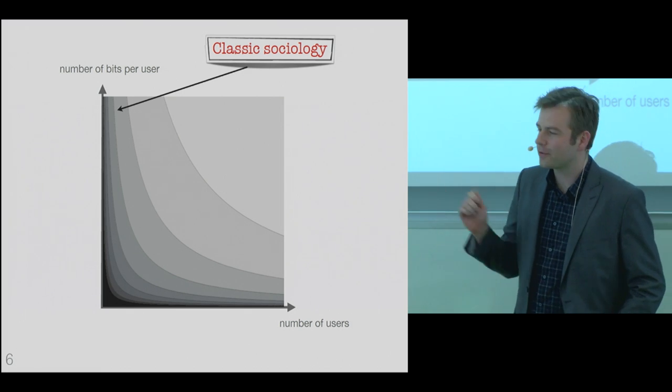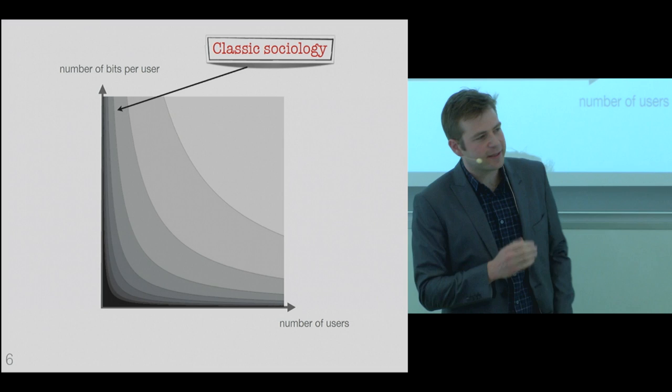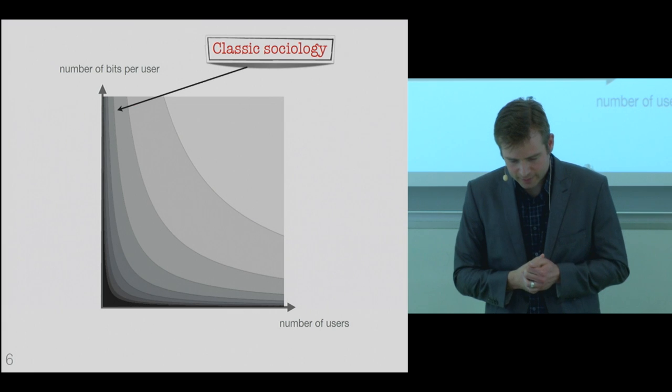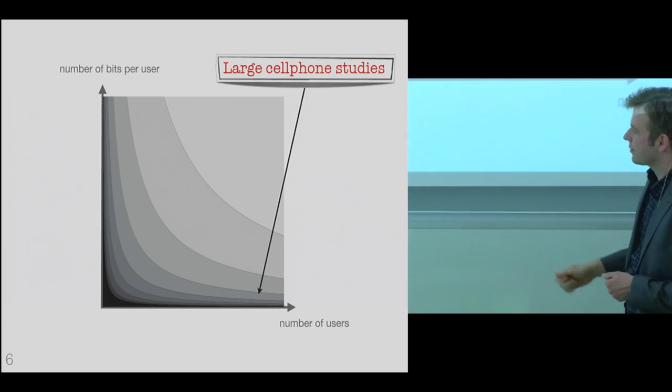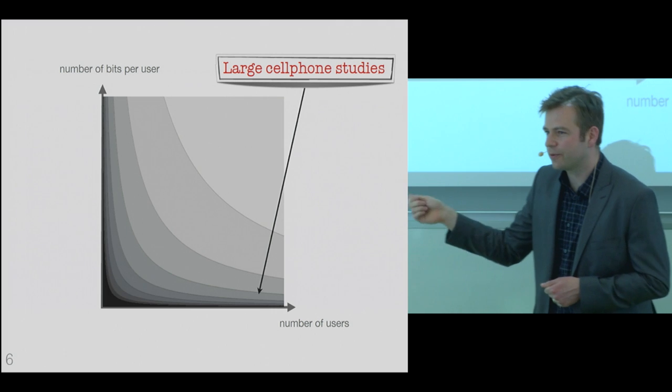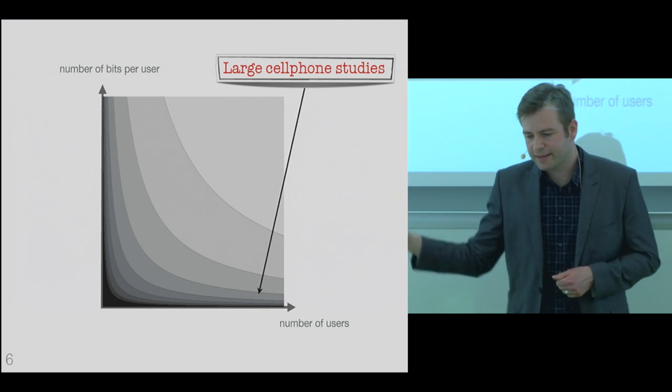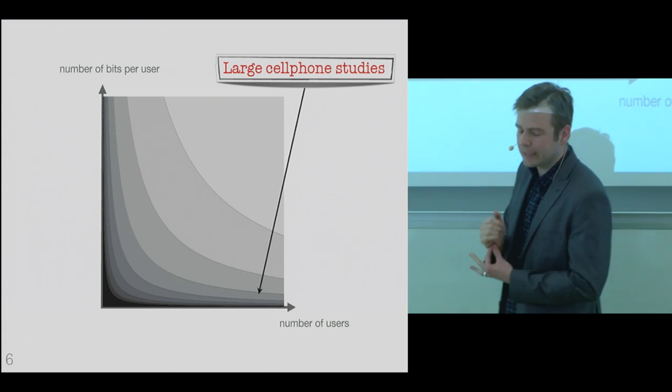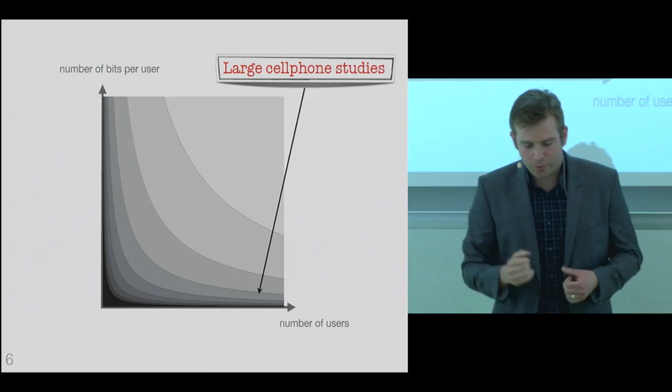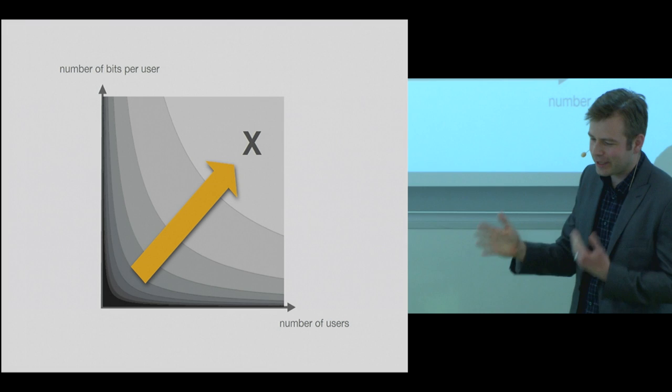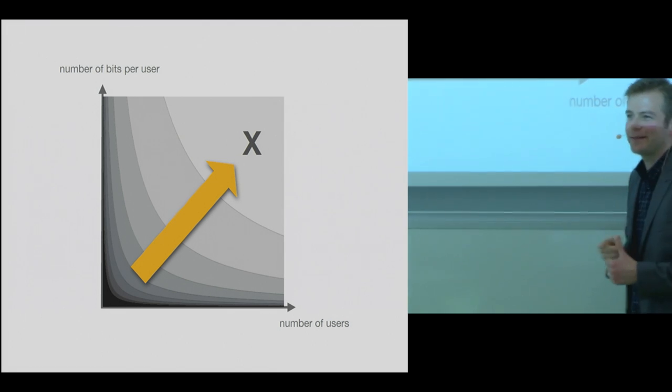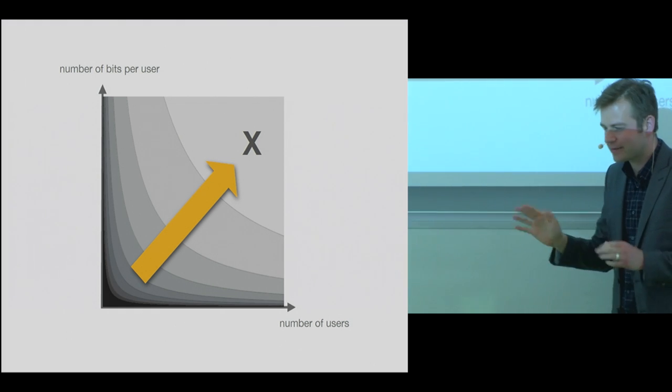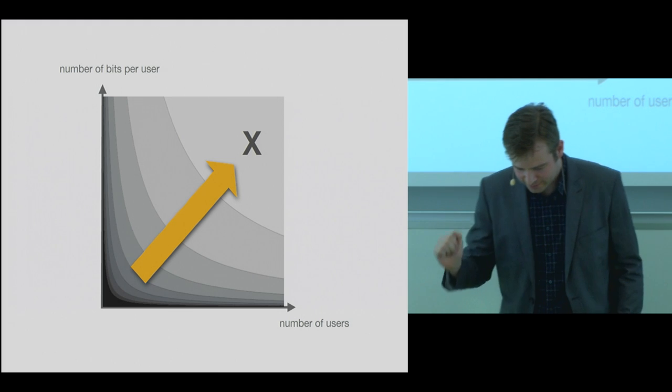So on a plot of the number of users versus the number of bits collected per user, we can kind of think of darker colors as expressing the density of previous studies. So up along the y-axis we have the traditional social science. You send a guy out, he looks at some people for a year, collects a lot of information. Along the x-axis we have sort of these large nation-spanning cell phone studies, millions of users, only a little bit of information from each user. Now, what we want to do is to create a study that's not just 10% greater than last time, but 10 times greater and kind of try and move out in this grey area and step boldly where no one has stepped before.